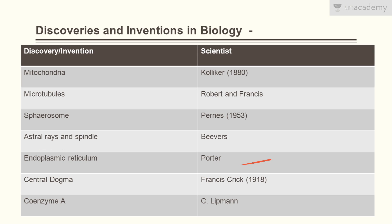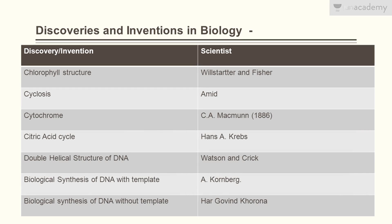Central dogma was discovered by Francis Crick in 1958. Coenzyme A was discovered by Lipmann. Chlorophyll structure was discovered by Willstätter and Fischer. Cyclosis was discovered by Amici. Cytochrome was discovered by MacMunn in 1886.